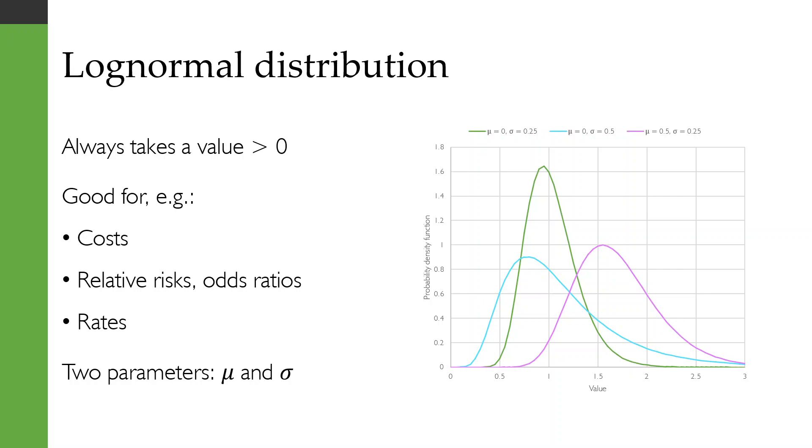And it has two parameters, mu and sigma, and they are just like the mu and sigma in a normal distribution, because if you take the log of a lognormal distributed variable, it has the normal distribution.